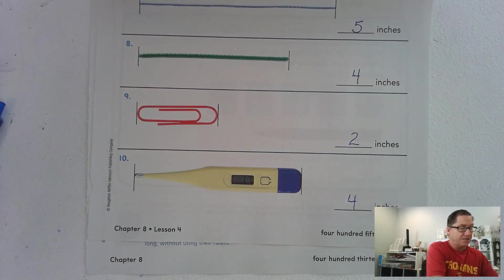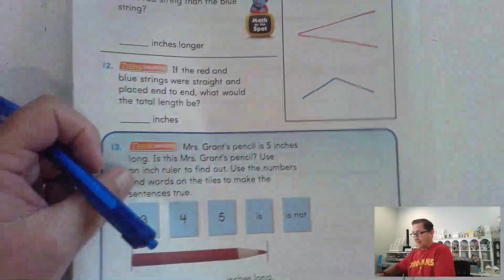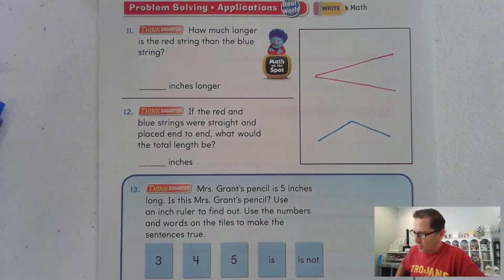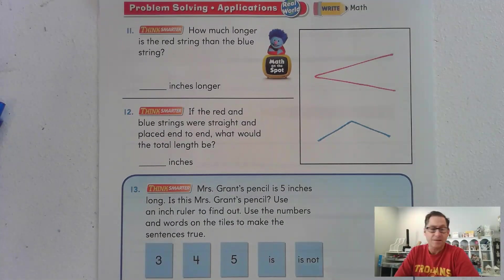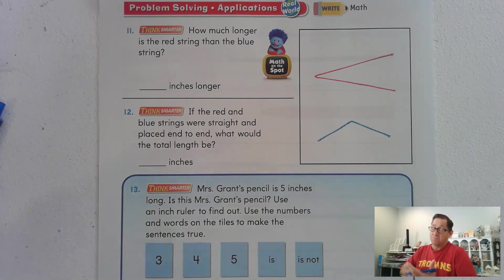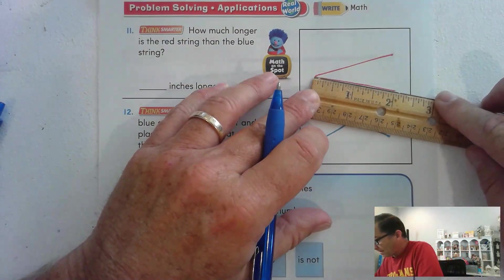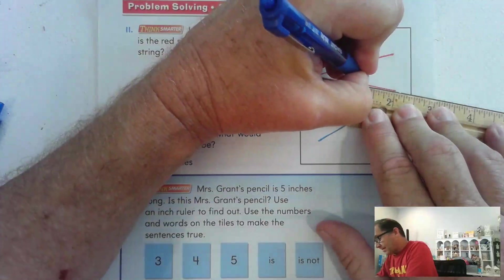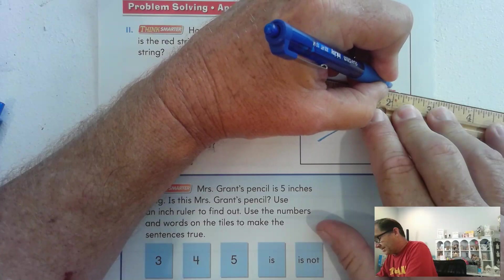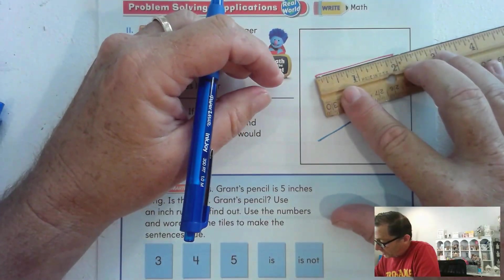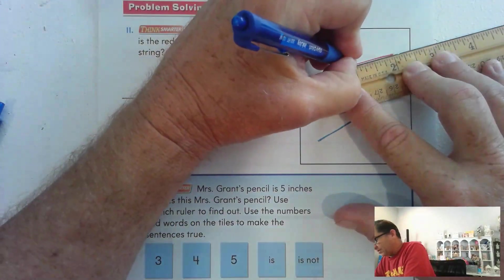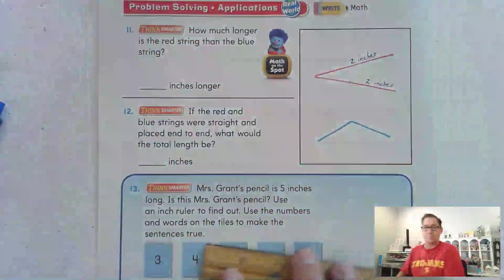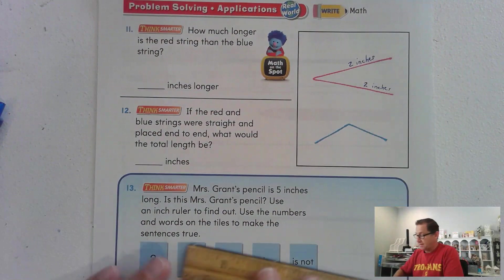So let's go ahead and go to the last page. Turn to page 416. And it wants to know how much longer is the red string than the blue string? Let's see. So the red string, that's about two inches. But then we also have this side. And so if we straighten it up, that would also be two inches. So go write that on the sides, two inches, two inches. Now let's see about the blue.